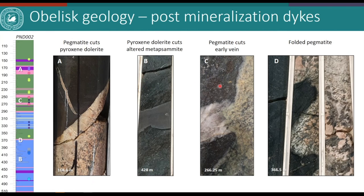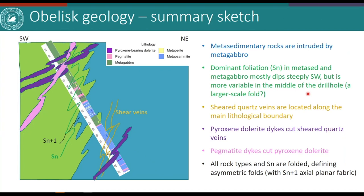These post-mineralisation dikes cut alteration and the pervasive fabric, but locally you can see folding of the pegmatite, indicating a second folding event with local development of an axial planar foliation in the pegmatite. Summarised in the sketch, the first event is the formation of metasedimentary rocks, which are intruded by the gabbro. Folding of this contact forms a pervasive foliation — the S1 — which dips steeply to the southwest. Mineralised quartz veins occur within both rock types as shear veins. Dolerite dikes cut the gabbro and sedimentary rocks, and are in turn cut by the pegmatite. Later folding resulted in refolding of all these rock types, including the shear veins.